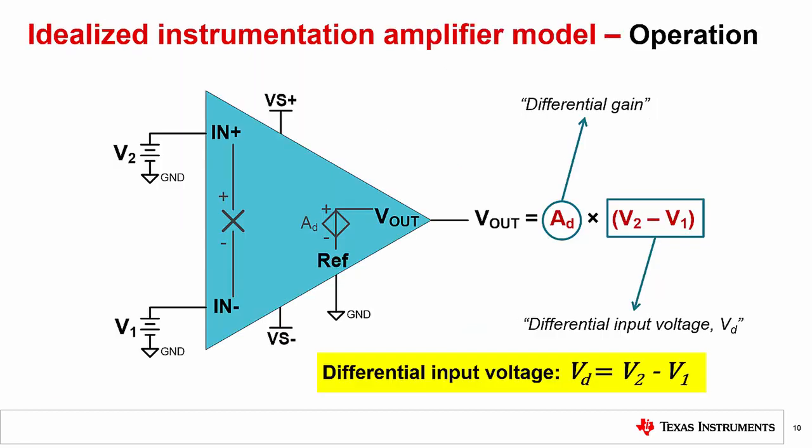To recap our original circuit, we have a differential input voltage equal to V2 minus V1, and the differential gain AD. Again, for an ideal IA, we expect the output to be equal to the differential gain AD multiplied by the differential input voltage, VD.